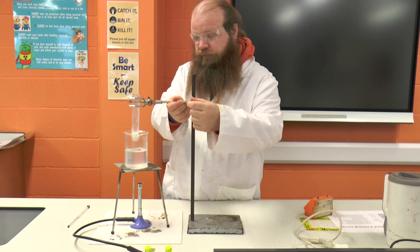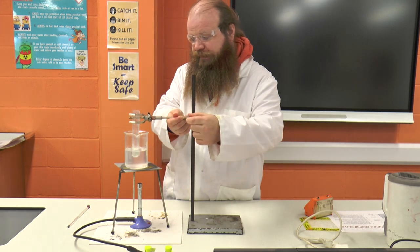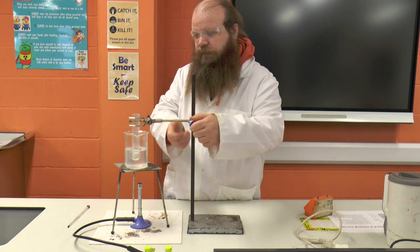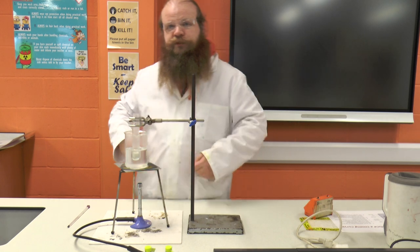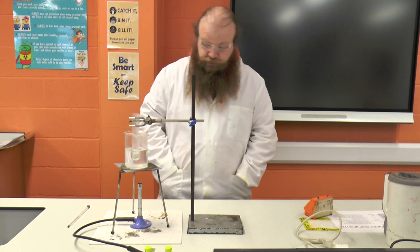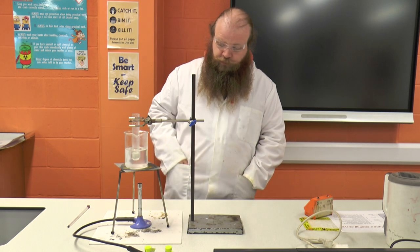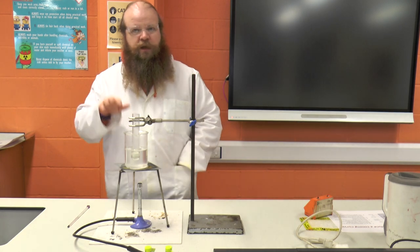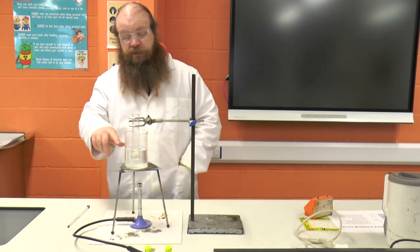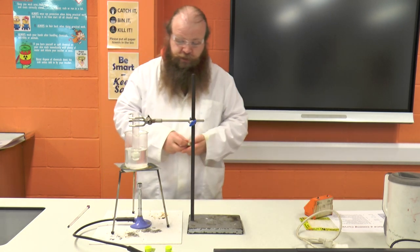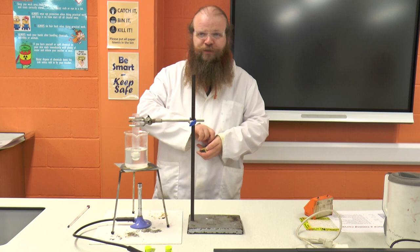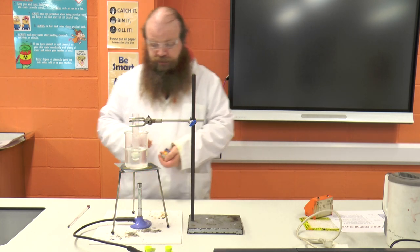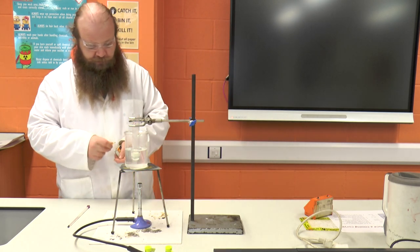We're going to put the stearic acid down into the boiling water and we're going to hold it there using a clamp and stand. It's important that the level of the stearic acid is below the water line of the boiling water in the beaker, but the boiling tube is not touching the bottom of the beaker as that can cause the beaker to crack.